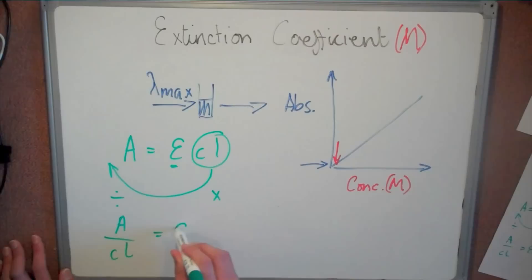As the cuvette has a width of 1 cm, we can ignore path length.